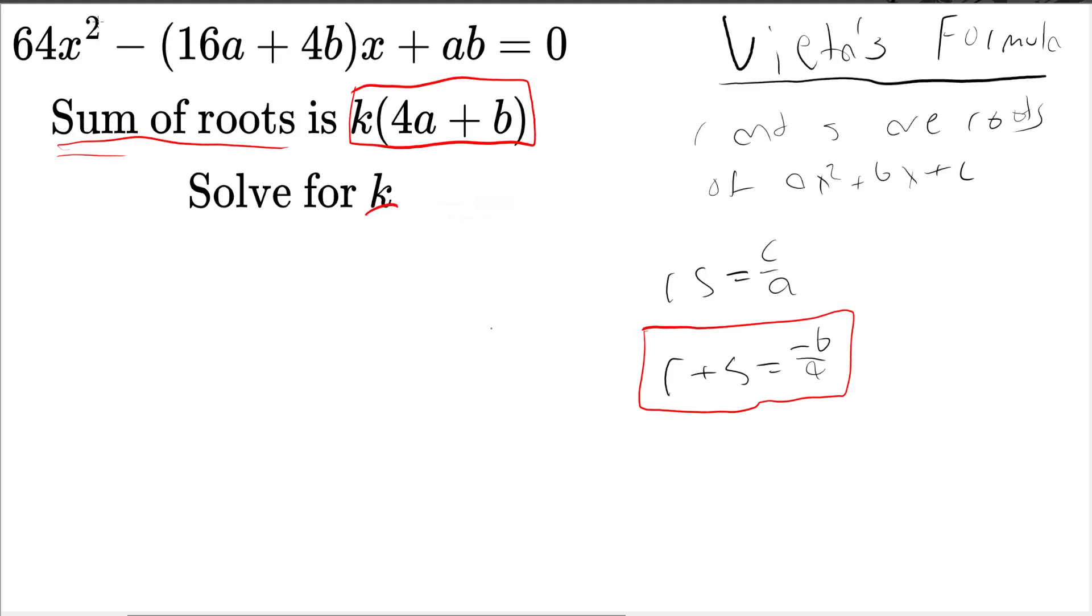We're solving for k. We can substitute the left-hand side since we know the sum is k(4a + b). We can write that as k(4a + b) here.